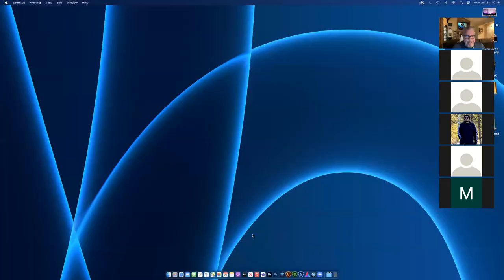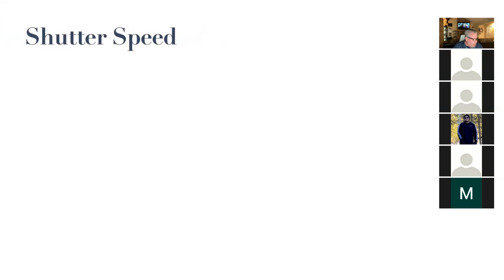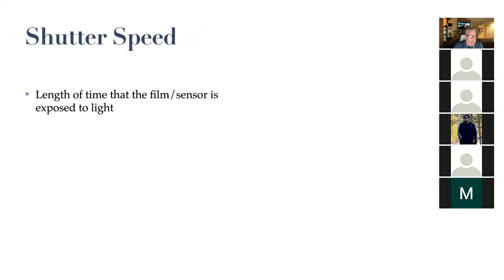Now let's get back to basics before I get to your assignment. Shutter speed is defined as the length of time that the film or the sensor is exposed to light. That's the actual definition of what shutter speed is. If I repeat the same thing three times in my lecture, it will be on a quiz. So: shutter speed is the length of time that the film or the sensor is exposed to light.